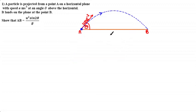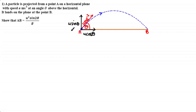Here we've drawn a diagram showing a particle projected from point A to point B with a speed of u meters per second at an angle of theta above the horizontal. To best describe the motion we split the vector u into two components: the horizontal component is u cosine theta, and the vertical component is u sine theta. We also show the acceleration acting downwards due to gravity as g meters per second squared.